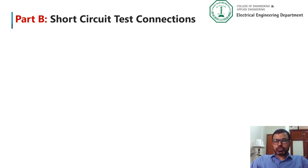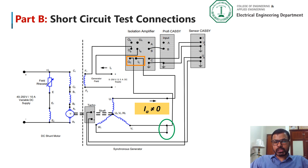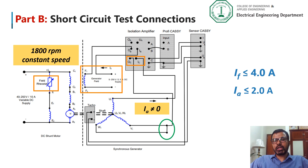In part B, we will study the short circuit characteristics of the synchronous generator. As you can see from the circuit diagram, terminals V1 and W1 of the synchronous generator are shorted, whereas the other two terminals are connected to an ammeter. So the armature current will not be zero as in the open circuit test. For the short circuit test, we have to keep three things in mind: the field excitation should not exceed 4 amperes, the armature current should not exceed 2 amperes, and the motor speed should be kept constant at 1800 RPM.